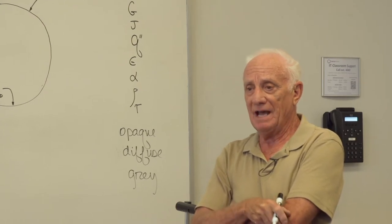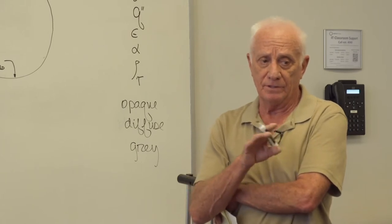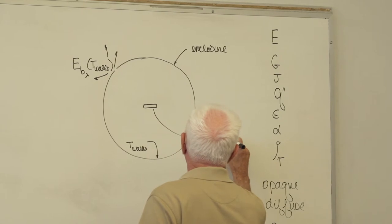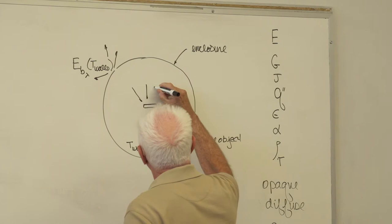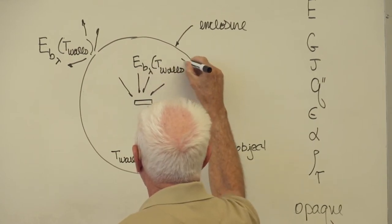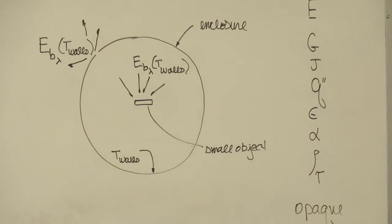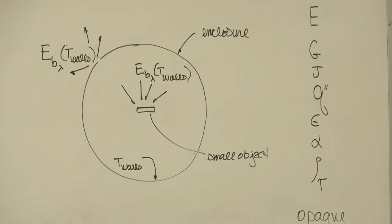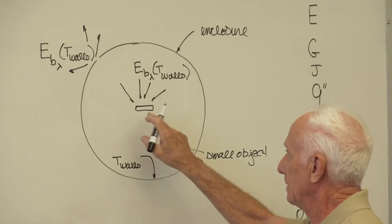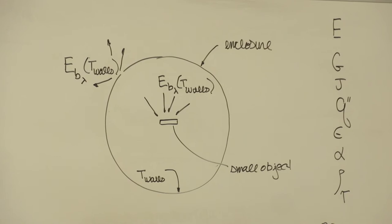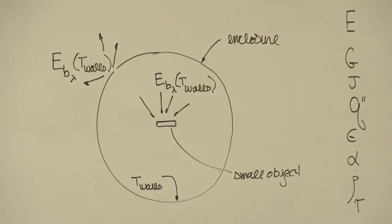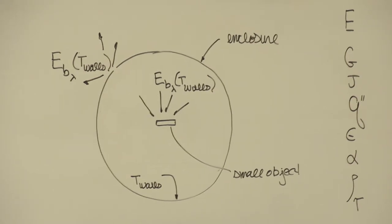Here's the other thing. If I put a small object in this enclosure, the radiation that comes into this from the walls appears to have come from a black body at the temperature of the walls. Go back to Chapter 1. What if we have a small object in a large enclosure? We're going to prove that in Chapter 13. If I put a small object in this enclosure and heat the walls to temperature T_walls, the radiation approaching that small object looks like it has a spectral distribution of a black body at the temperature of the walls.